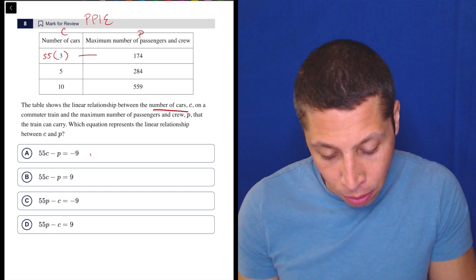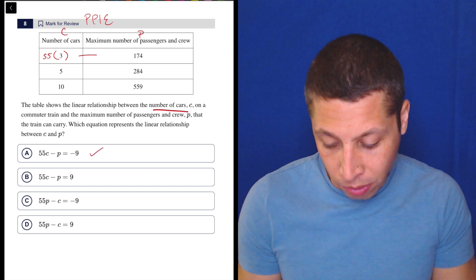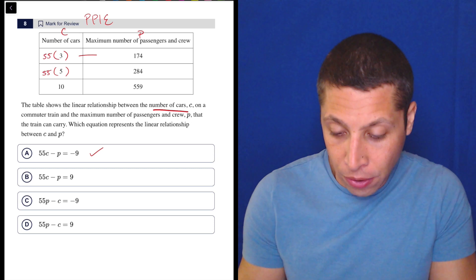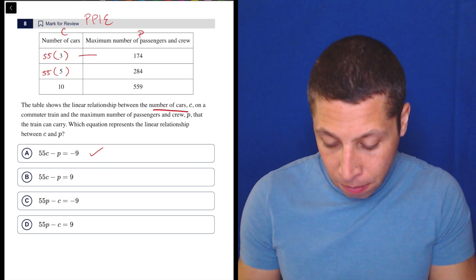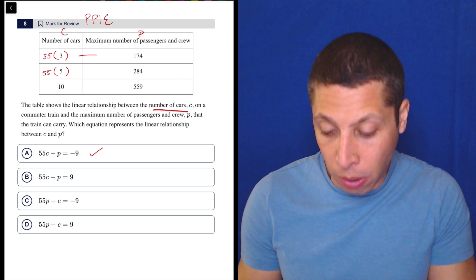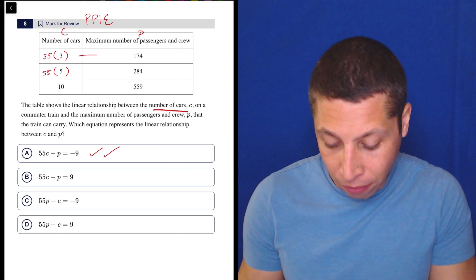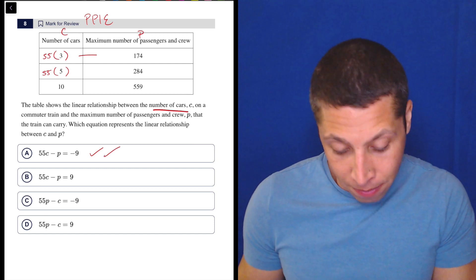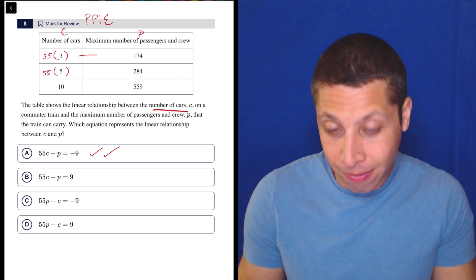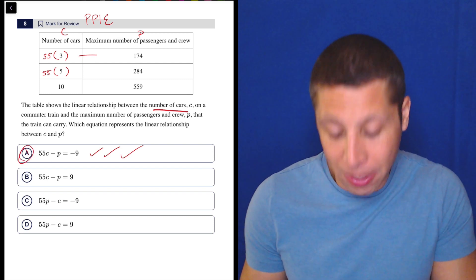So that checks out, but let's do it for the other points. So 55 times 5 minus 284 is still negative 9, so that looks good. And let's get one more check, 55 times 10 minus 559, negative 9. So triple check, I'm done.